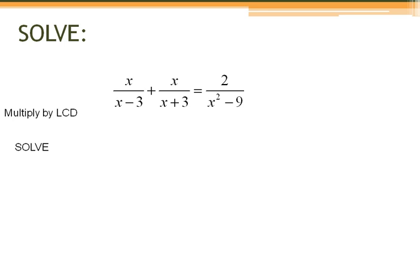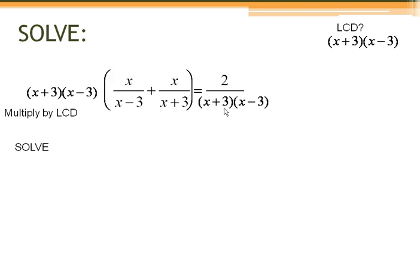All right, so first thing it says, multiply by the LCD, so we've got to do some factoring. So over on the bottom right there, we've got to factor that: x plus 3 and x minus 3. So our LCD, the thing that'll make these all the same, is x plus 3 and x minus 3. So we're going to multiply everything by the LCD. Everything on the left side here, this entire left side of the equation, gets multiplied by your LCD.